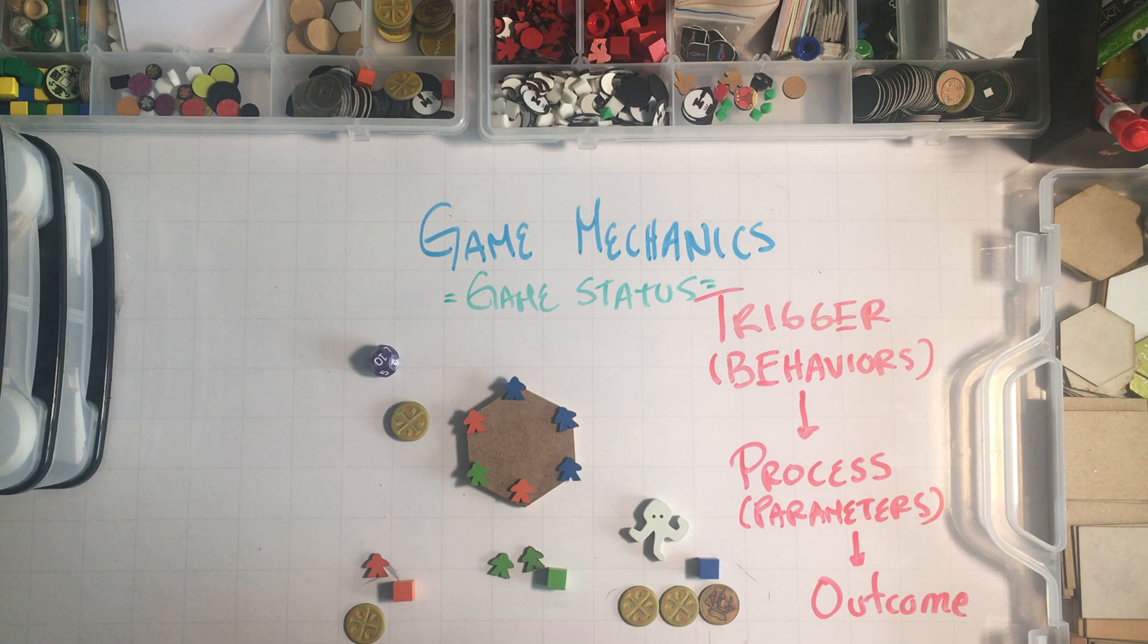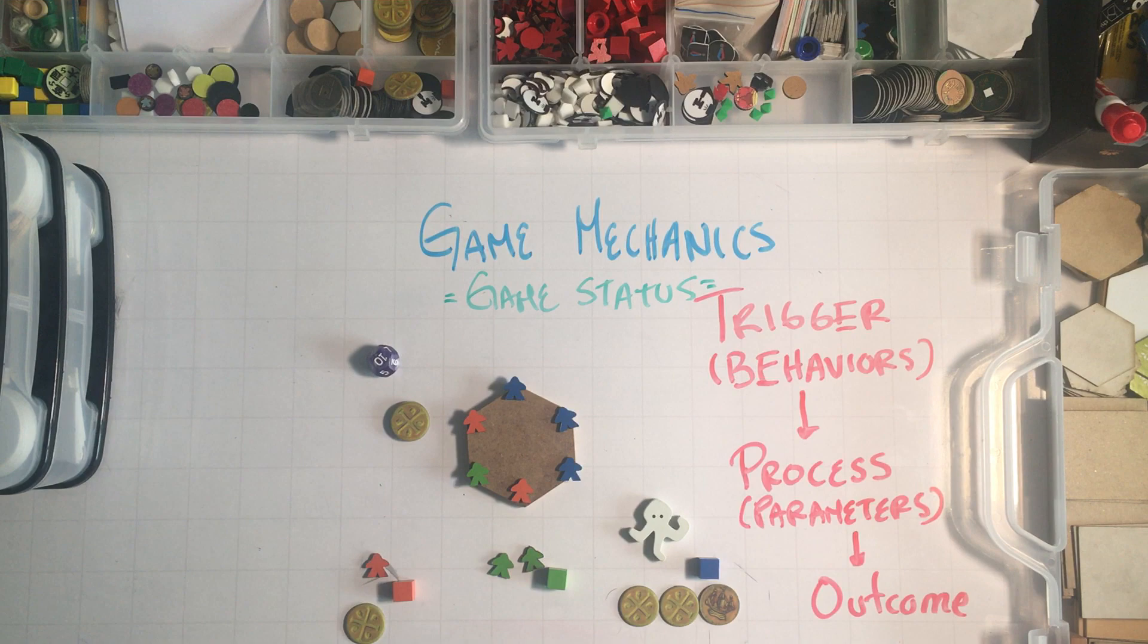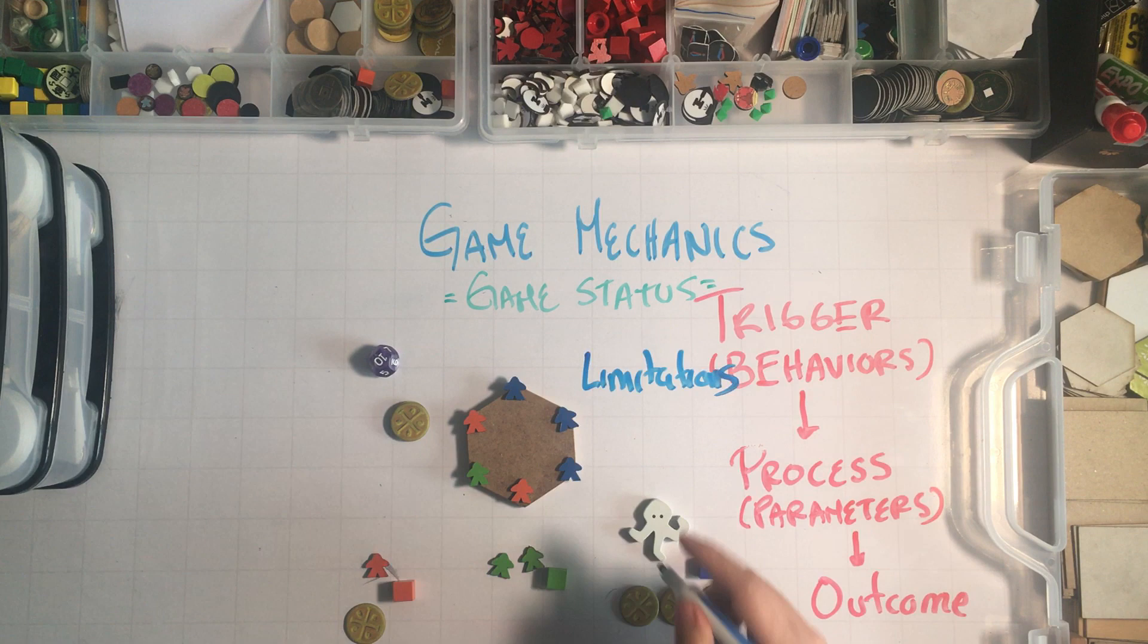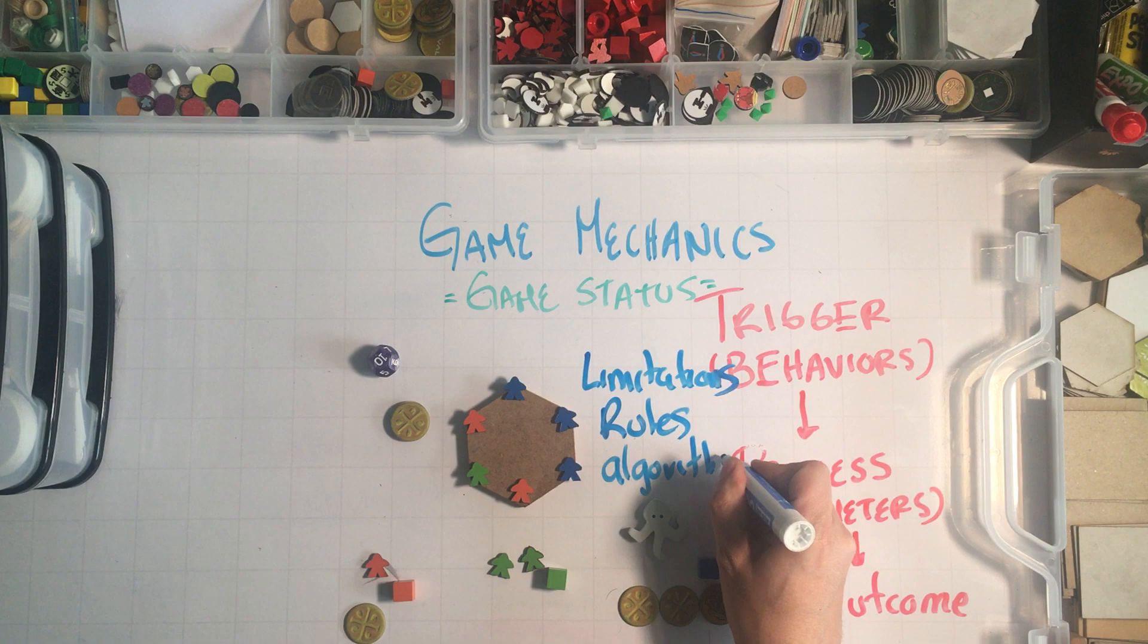Points, badges, leaderboards are not game mechanics. They're part of game mechanics and can be used to create different game mechanics and game rules. And game mechanics are actually built by creating limitations and constraints, and by creating rules, algorithms. That's what creating game mechanics is about.